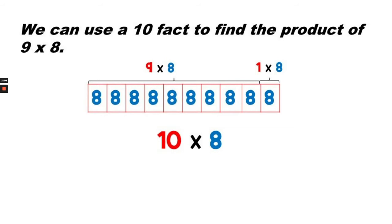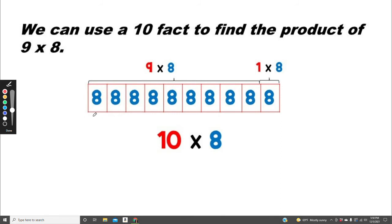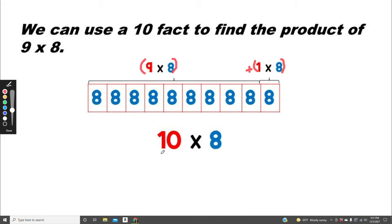Now we can use a 10-fact to find the product of 9 times 8. We said that there are 10 boxes in all and 10 times 8 equals 80. We separated 9 times 8 — that leaves 1 times 8 left over. So the sum of 9 times 8 plus 1 times 8 is the same as 10 times 8.